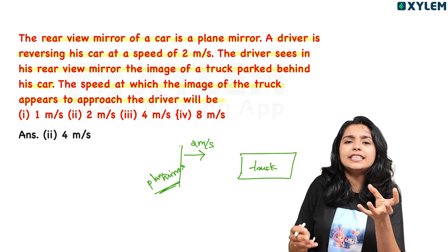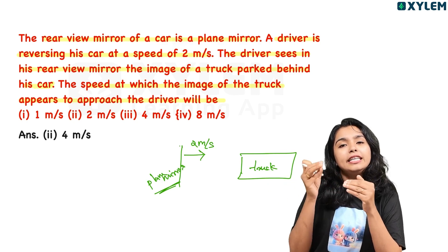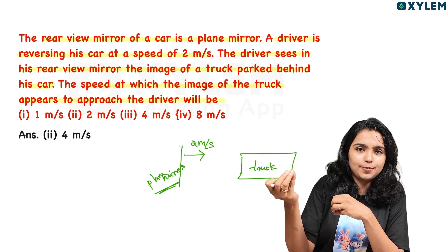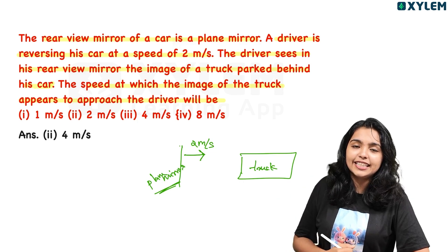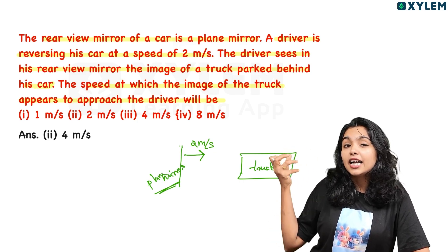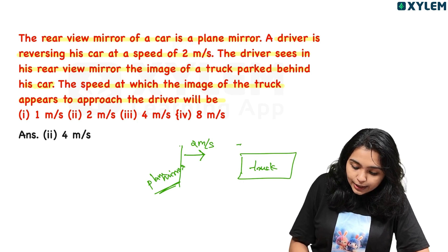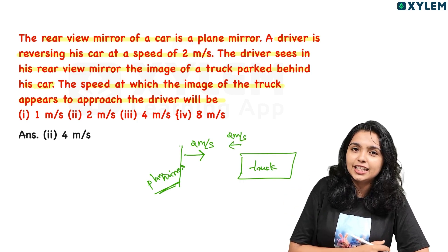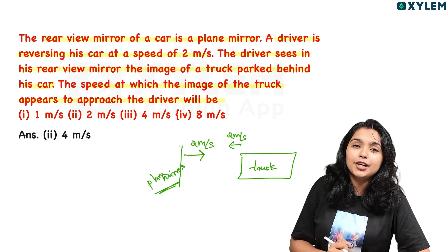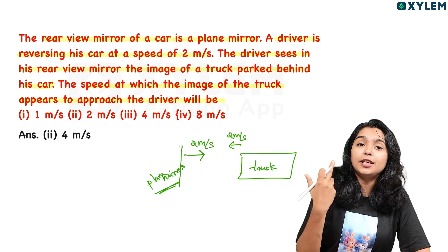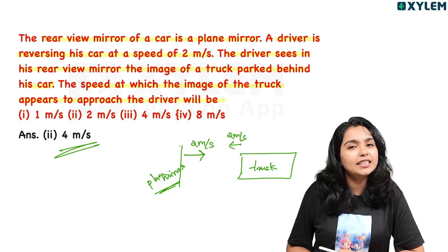A truck's image is seen in a plane mirror. If the truck is reversing at 2 meters per second, we can calculate how fast the image appears to move. We need to find the speed of the image as seen by the driver.